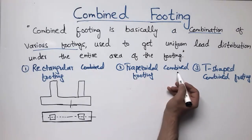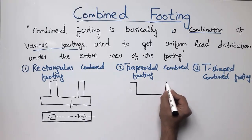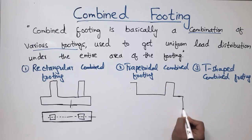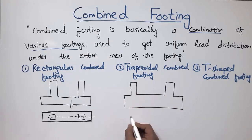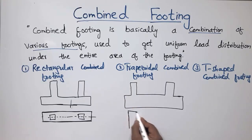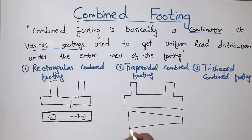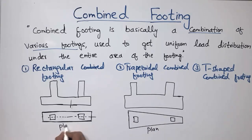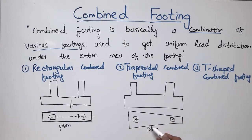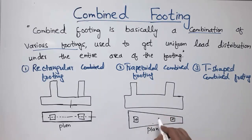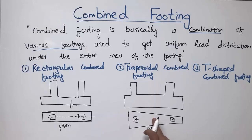The second subtype is the trapezoidal combined footing. In elevation view it looks similar to the rectangular type, but in plan view the shape looks like a trapezoid. There is one column and another column, and in plan view the combined footing shape looks trapezoidal — that is why it is called the trapezoidal combined footing. The footings are still combined, but instead of a rectangle, the shape is a trapezoid.